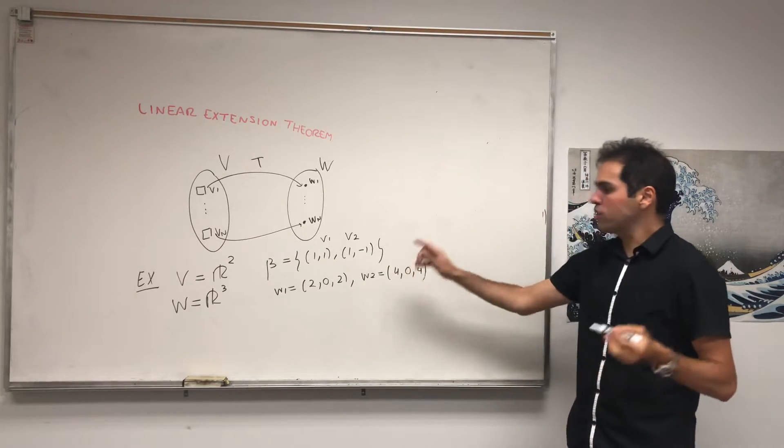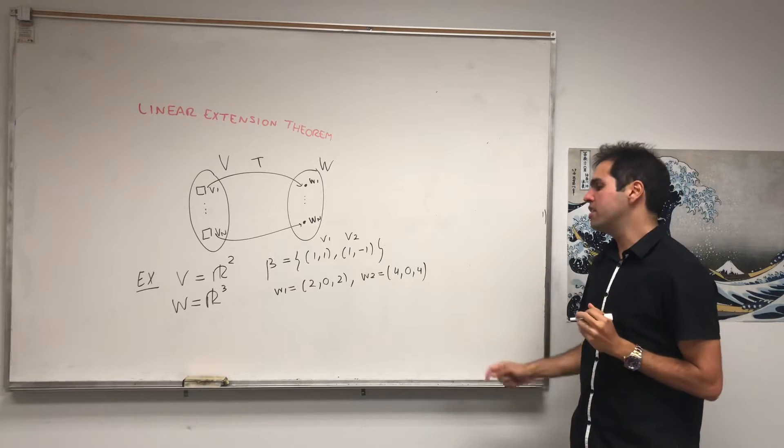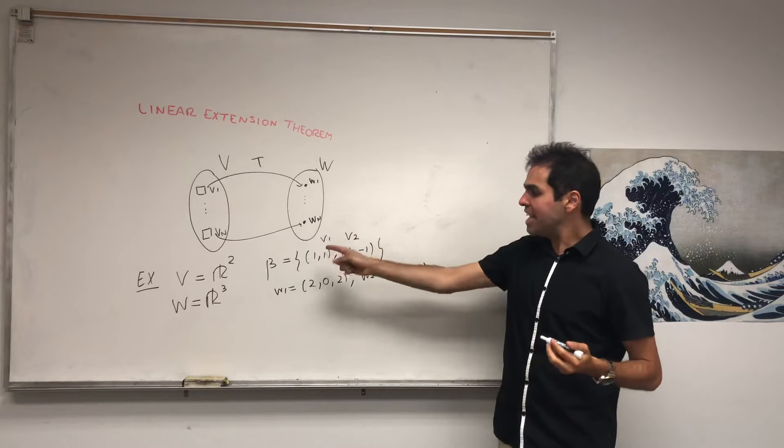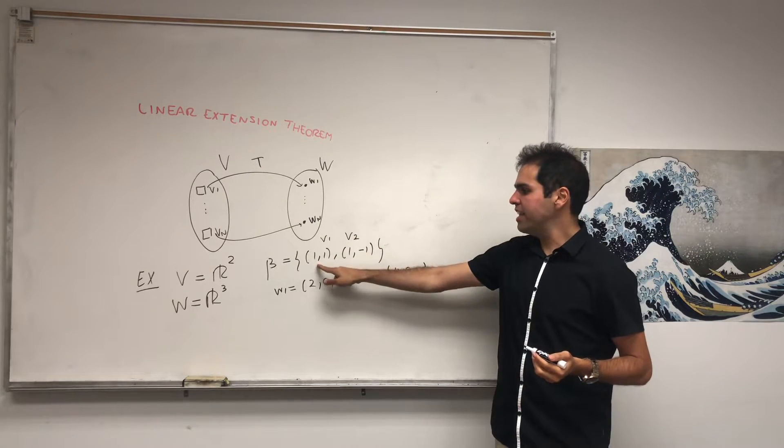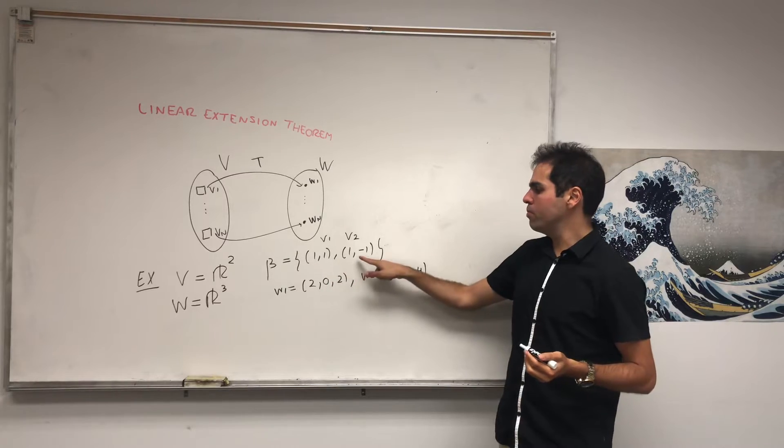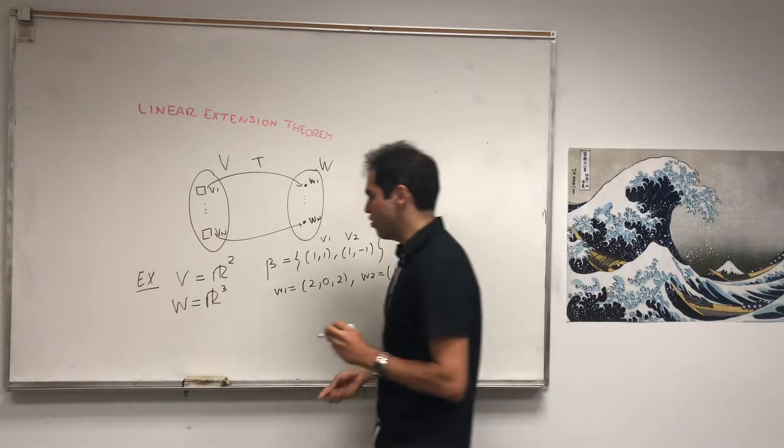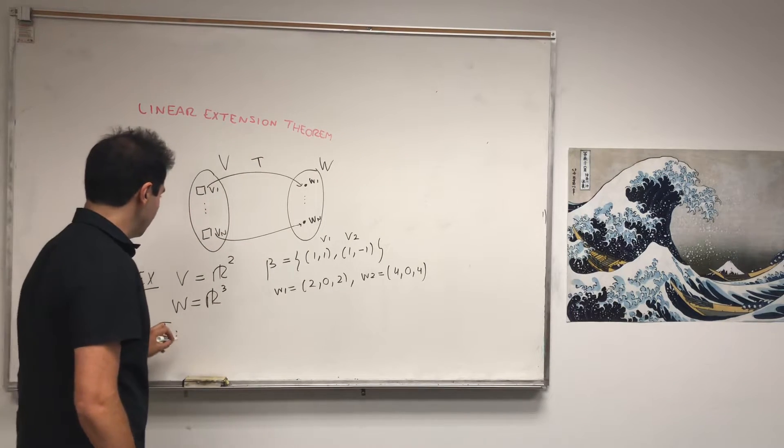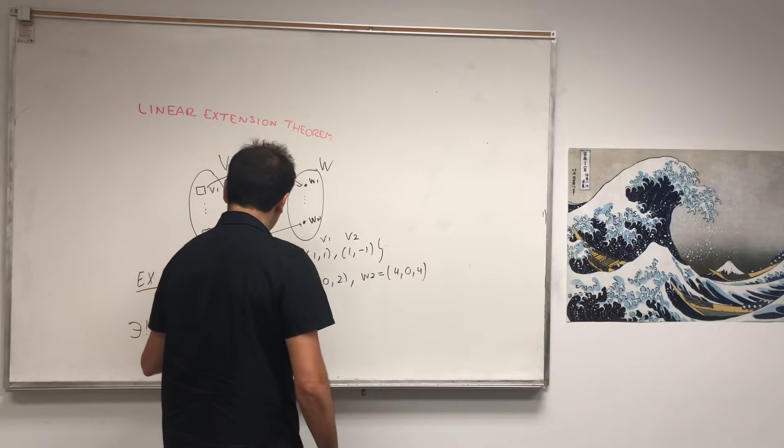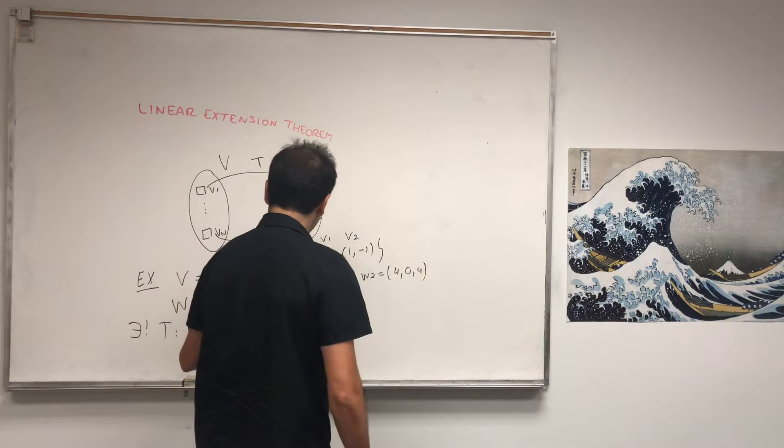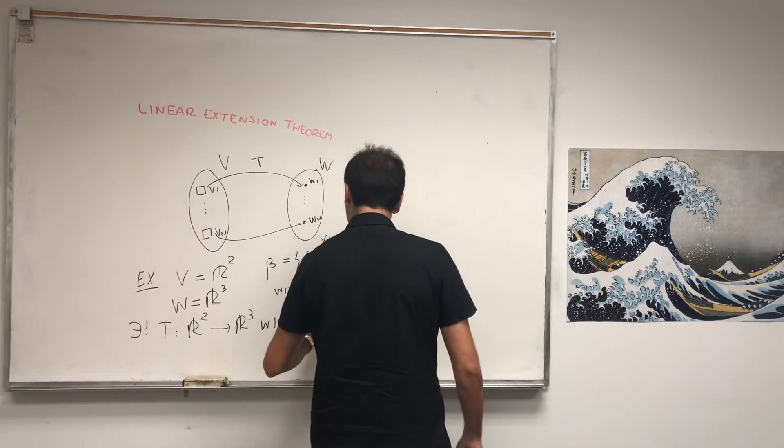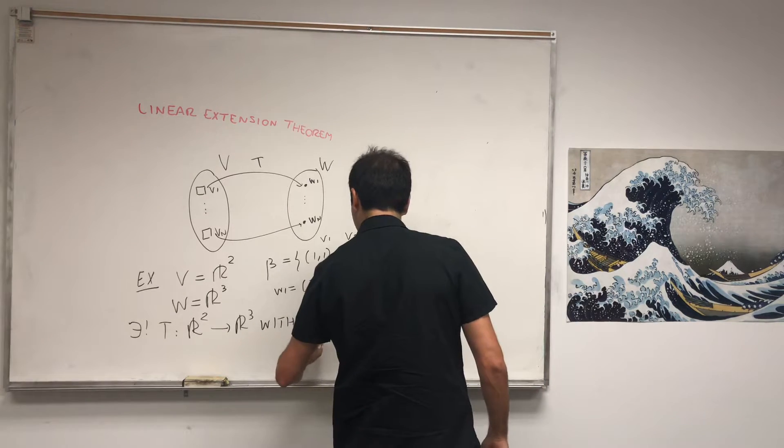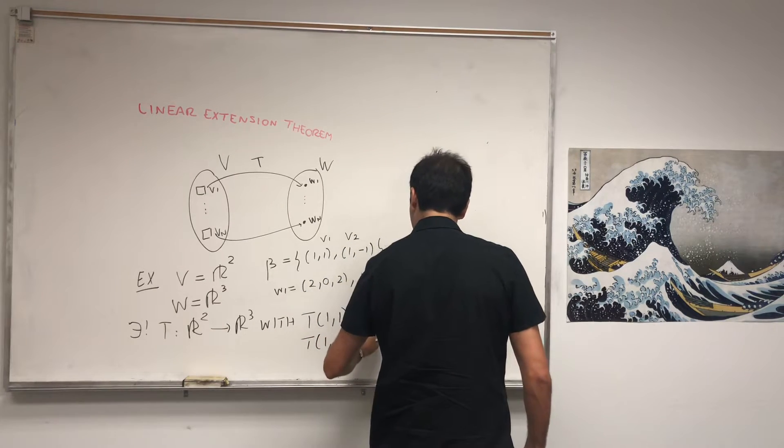Very important, notice, those vectors are not necessarily linearly independent. So what this theorem says is that there is exactly one linear transformation that takes (1,1) to (2,0,2), and (1,-1) to (4,0,4). So basically there exists a unique linear transformation T from R2 to R3, with T of (1,1) is (2,0,2), and T of (1,-1) is (4,0,4).